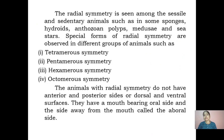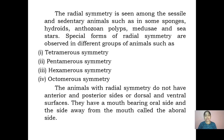Radial symmetry is seen among sessile and sedentary animals such as some sponges, hydroids, anthozoan polyps, medusae, and sea stars. Special forms of radial symmetry include tetramerous, pentamerous (as in starfish with its five arms), hexamerous, and octamerous symmetry. Animals with radial symmetry do not have anterior and posterior sides or dorsal and ventral surfaces; they have a mouth-bearing oral side and the side away from the mouth called the aboral side.